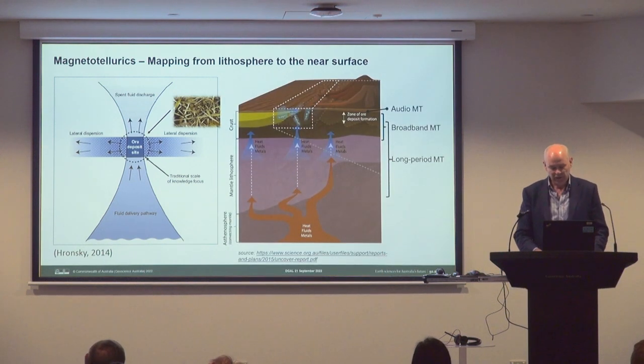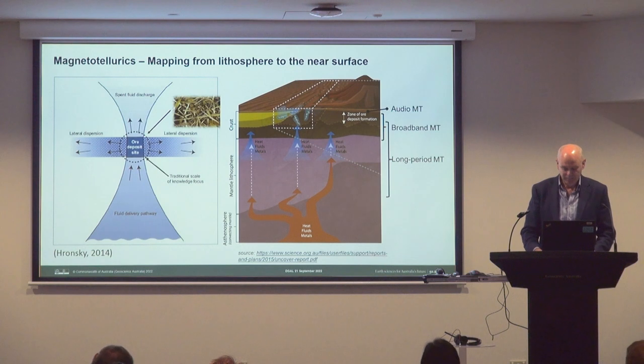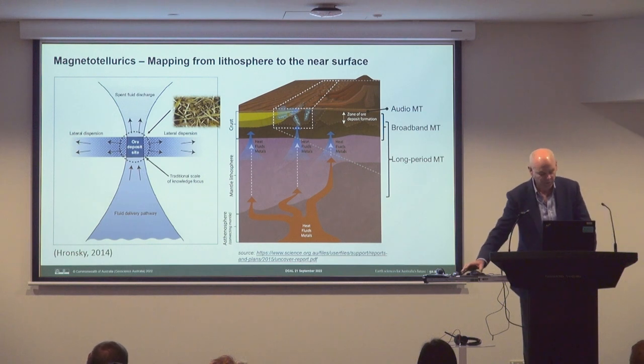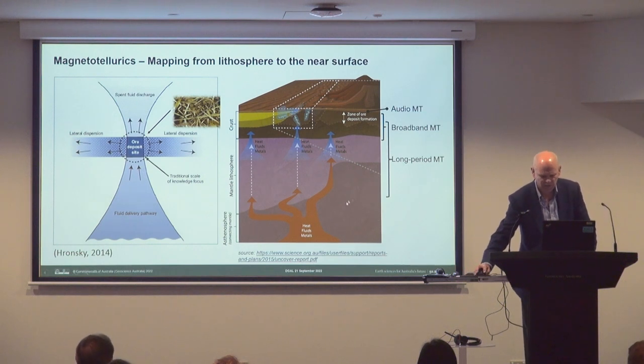Geoscience Australia requires three types of MT data. The first, very high-frequency audio MT data, targets structures in the upper few kilometres of the crust and can be used to characterise cover. High-frequency broadband data can be used to map crustal architecture. And long-period MT data can image Earth's lithosphere to a depth of a few hundred kilometres.